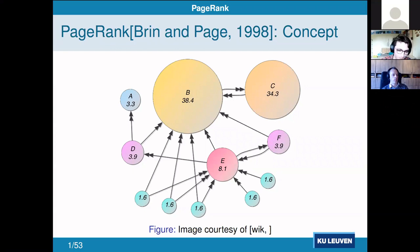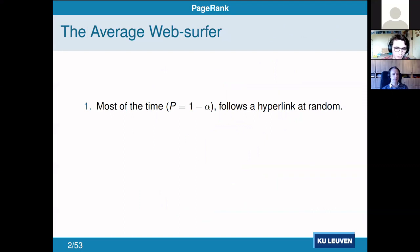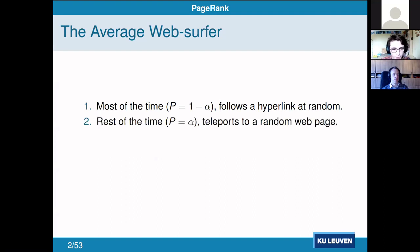PageRank models a random web surfer. Most of the time, we just click a hyperlink at random — that probability is one minus alpha, where alpha is usually 0.15. The remainder of the time, we're done with whatever we're doing and we teleport to a random website. In our model, we teleport to any web page with equal probability, though some models give popular sites higher probability. If we're at a dead end — a page with no hyperlinks — we just teleport all the time.